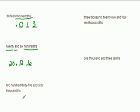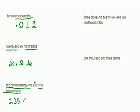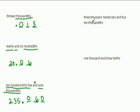Two hundred and thirty-five and sixty-thousandths. So we have two hundred and thirty-five, then 'and,' then sixty-thousandths. Tenths, hundredths, thousandths — sixty has to end in the thousandths place, so we need a zero as a placeholder.